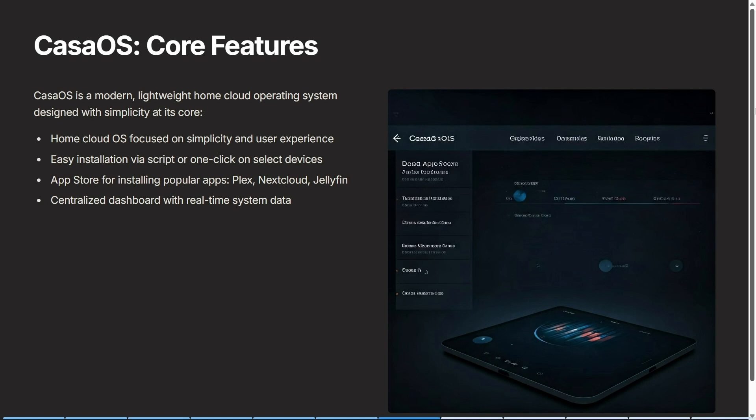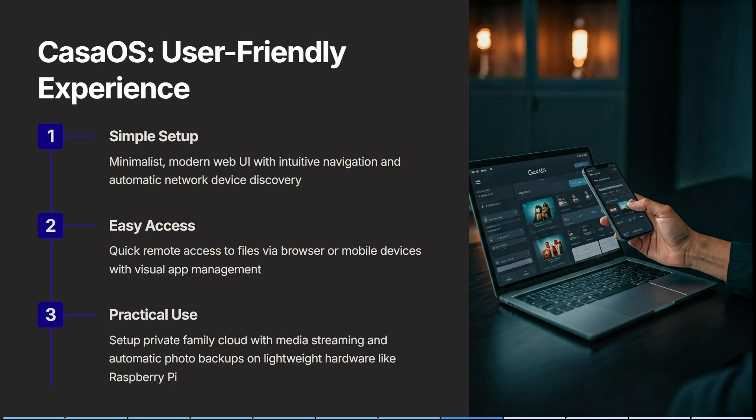CasaOS is a very modern, very lightweight home cloud operating system designed with simplicity at its core, focused on simplicity and user experience. It has easy installation via script or one click on select devices, and allows you to install popular apps from the app store including Plex, Nextcloud, and Jellyfin. It has a centralized dashboard with real-time system data, a minimalist modern web UI with intuitive navigation, and automatic network device discovery. You also get quick remote access to files via browser or mobile device.